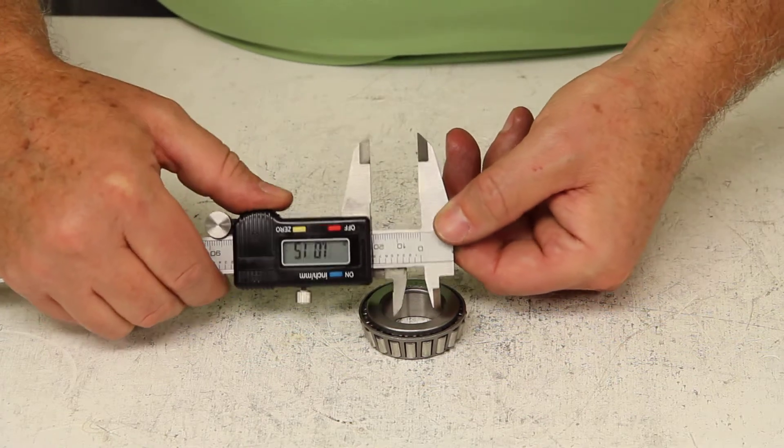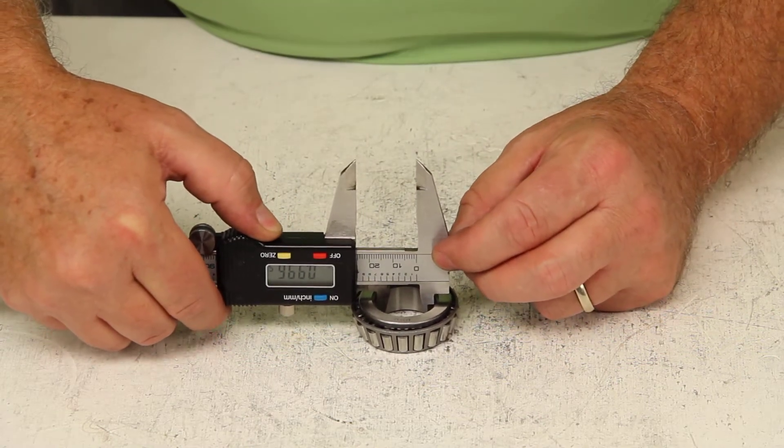In this case, if we measure the inner diameter of this bearing, it would be one inch.